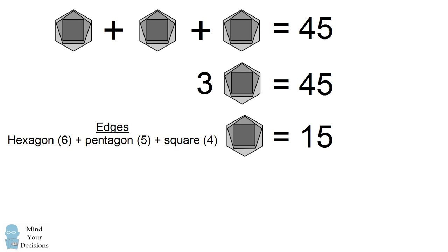We're going to have to figure out a value for the edges in order that we can figure out a value for the shape in the final line. So we can simplify this if we count the total number of edges. This shape has 15 edges and it's equal to 15. So we can conclude that one edge is equal to one.